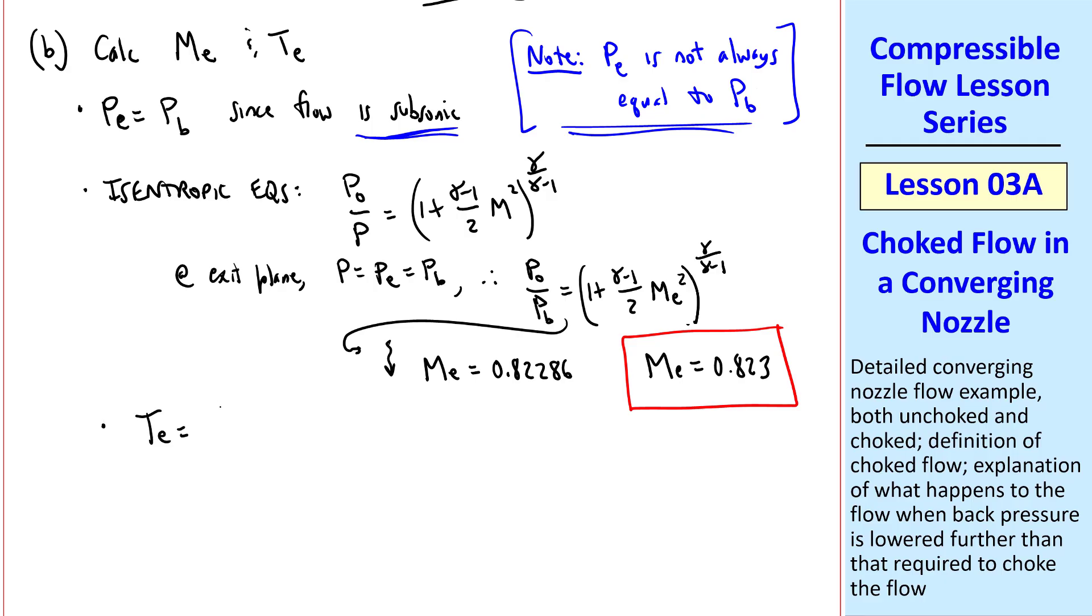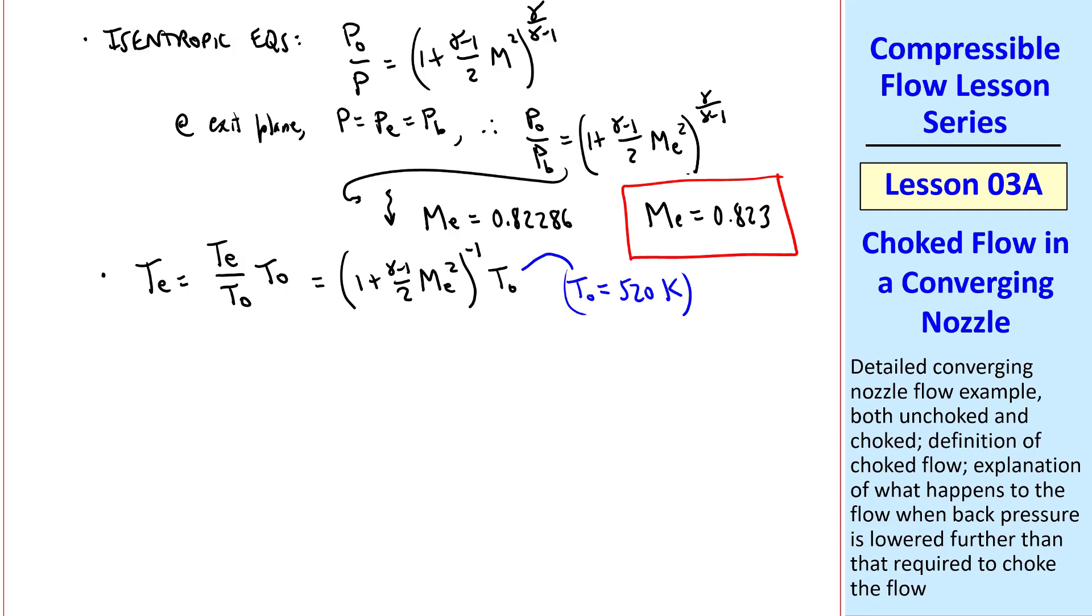To get temperature, I'll use ratios as follows. We have an expression for Te over T-naught, so I set T equal to Te over T-naught times T-naught. Well, Te over T-naught is 1 plus gamma minus 1 over 2 Me squared raised to the negative 1 power, and then we put our T-naught. Well, we know Me, and I'll use all these digits or keep it on your calculator storage, so we can plug that in here, and we're also given T-naught. Namely, T-naught is 520K. Plugging these in, not showing all the numbers, we get Te equal 457.98K. Or I will report this as 458K as my final answer.